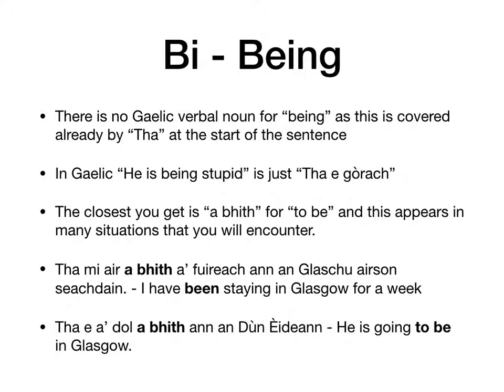There is no Gaelic word for 'being' — there's also no real Gaelic word for 'having'. There's no Gaelic word for 'being' because this is usually covered by 'tha' at the start of the sentence. In Gaelic you wouldn't say 'he's being stupid', you would just say tha e gòrach — meaning both 'he is stupid' and 'he's being stupid'. The verbal noun 'a bhith' does exist for 'to be' and it's quite common — for example: tha mi air a bhith a' fuireach ann an Glaschu airson seachdain — I have been staying in Glasgow for a week.